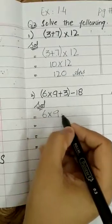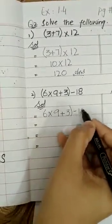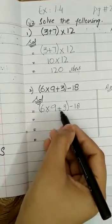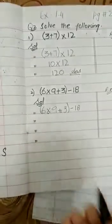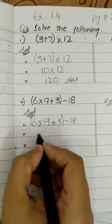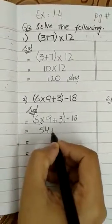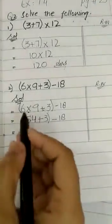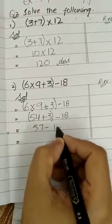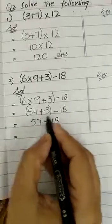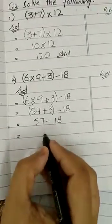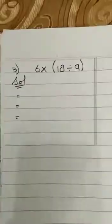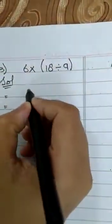Another example: (6 × 9 + 3) − 18. We repeat our question. First solve the bracket. Inside the bracket we have two signs — multiply and plus. According to DMAS, we solve multiplication first: 6 × 9 = 54. Then 54 + 3 = 57. Bracket is now solved. Then 57 − 18 = 39. And this is your answer.